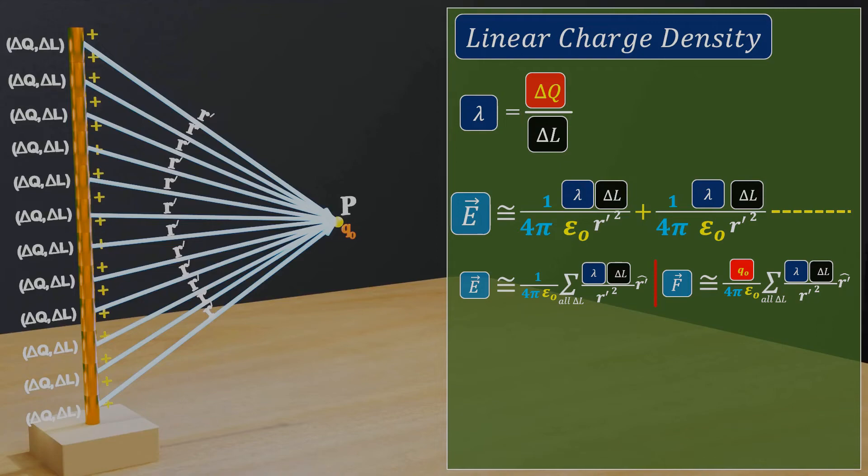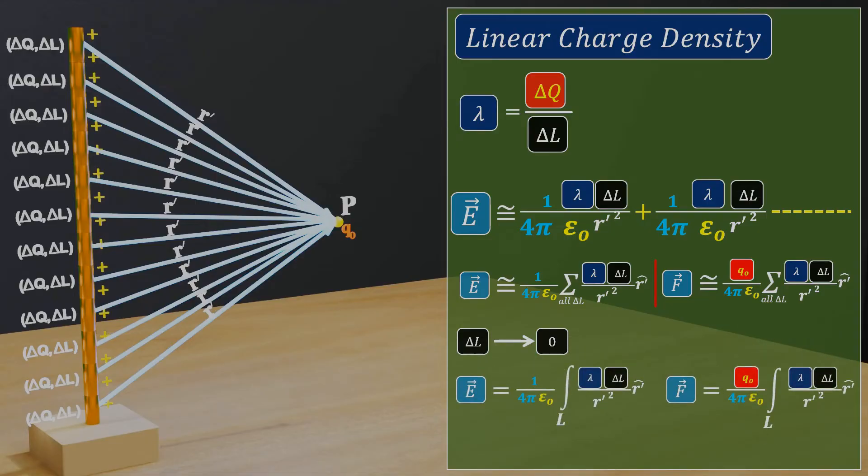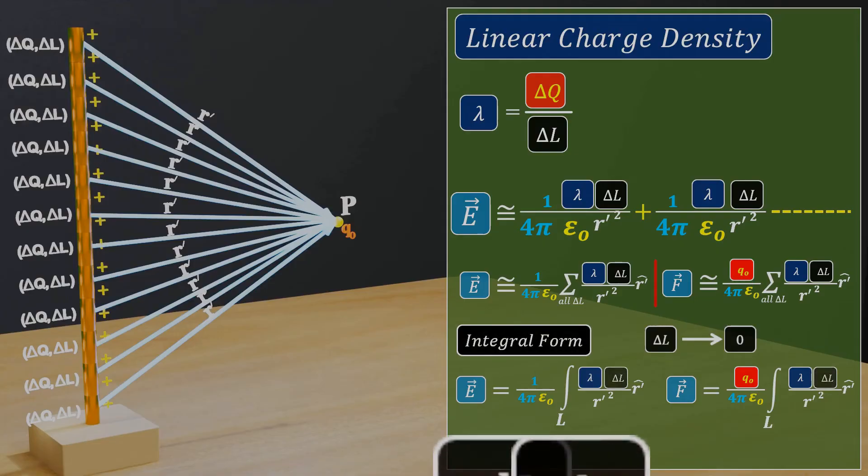Now when del L is very small or tends to zero, the sum becomes an integral and we can write the equation for electric field and force in integral form where del L will be replaced by dl. This is useful when we need to calculate the equation for electric field at a point due to a wire or line charge.